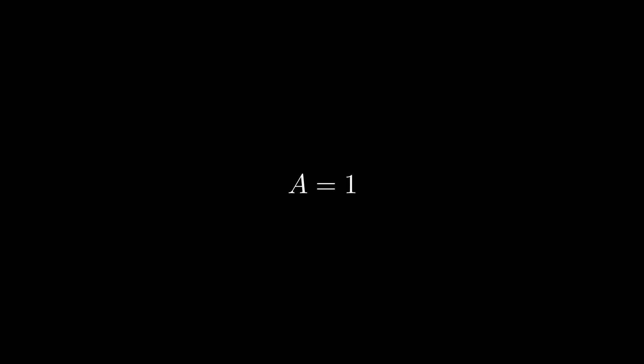Now we have the complete infinite product representation of the sine function, which can also be written as sine of x equals x times the product of 1 minus x squared over pi squared, 1 minus x squared over 4 pi squared, 1 minus x squared over 9 pi squared, and so on.